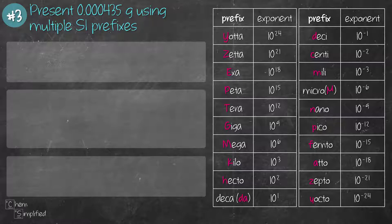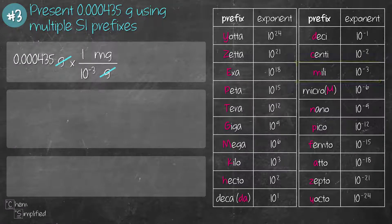We convert 0.000435 grams to milligrams. So we place gram at the bottom so they cancel out and then we put milligram on the top. From the prefix table, the value for milli is 10 to the negative 3. 1 milligram is 10 to the negative 3 grams. We do the math, we take that value 0.000435 divided by 10 to the negative 3. That works out to be 0.435 milligrams or 4.35 times 10 to the negative 1 milligrams.